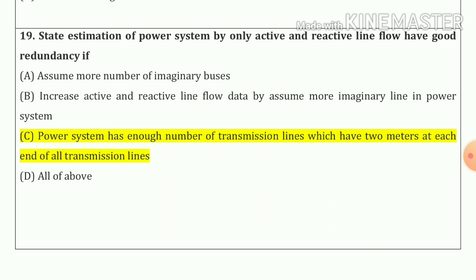Question number 19: State estimation of power system by only active and reactive line flow has good redundancy if the power system has enough transmission lines with 2 meters at each end of the transmission line. So our answer is option number c.